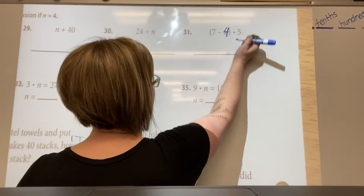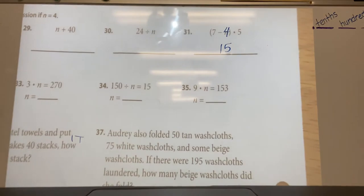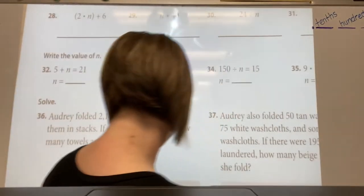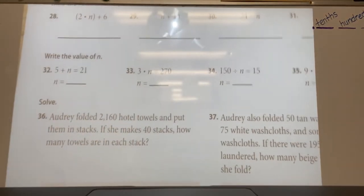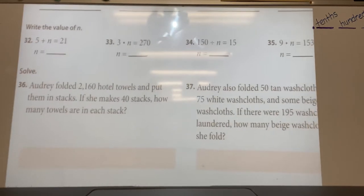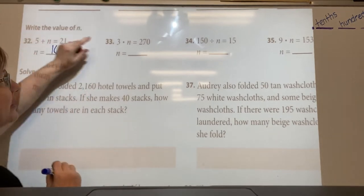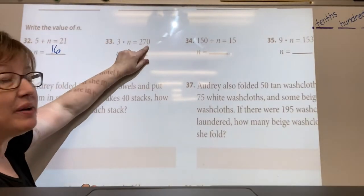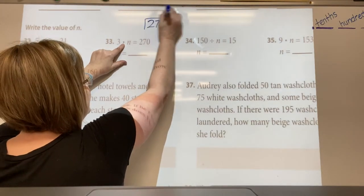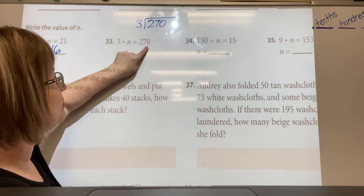Okay, then we have write the value of n. This is so much like yesterday's page. This time you don't know what n is. So 21 minus 5 is 16, we did that one together yesterday. 3 times what would equal 270? So do the opposite, 270 divided by 3 will give you what you need to times 3 to get that number.